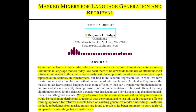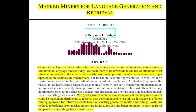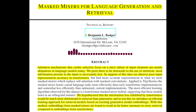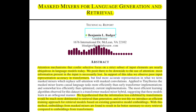The paper also investigates the use of multiple heads or larger convolutional kernels in masked mixers. The authors find that increasing the number of convolutional heads or the kernel size can improve performance. However, these improvements are often marginal and don't significantly outperform the basic flat masked mixer architecture.